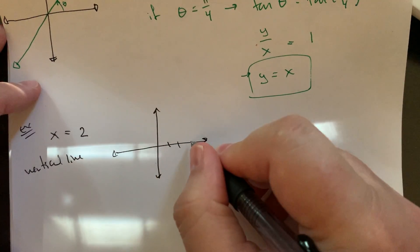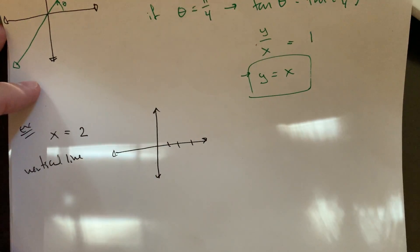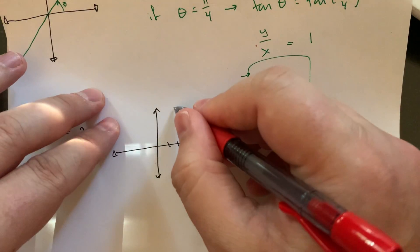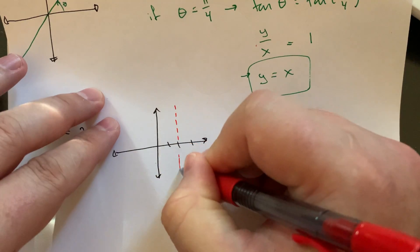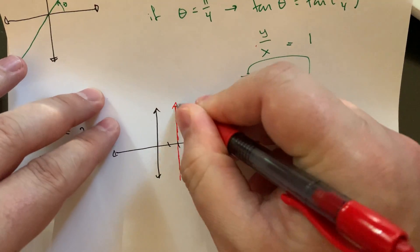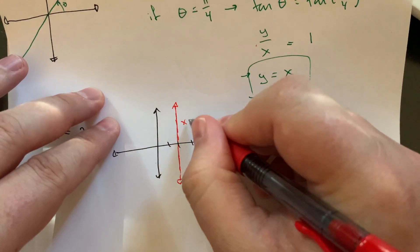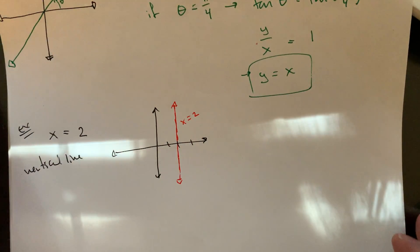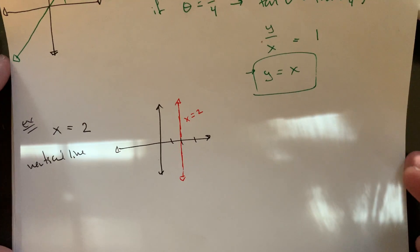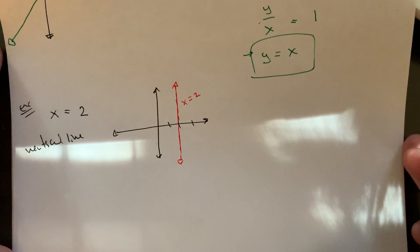So one, two, so your graph there would just be straight up and down. So x equals two, and you'd say, okay, well, that's like a very boring thing.